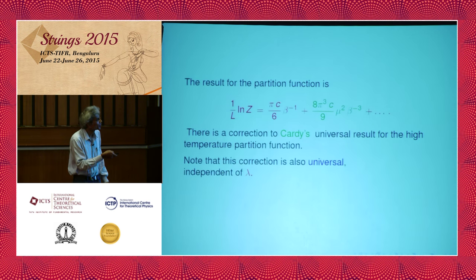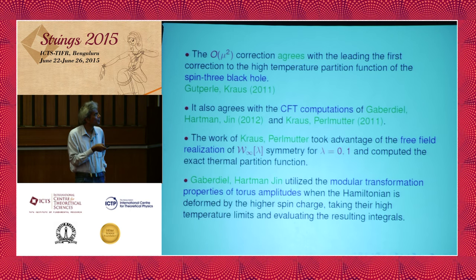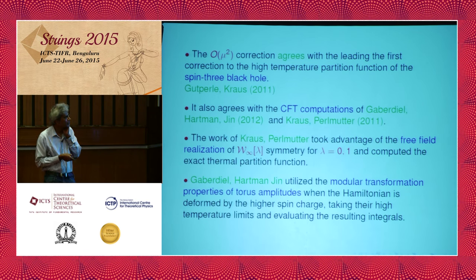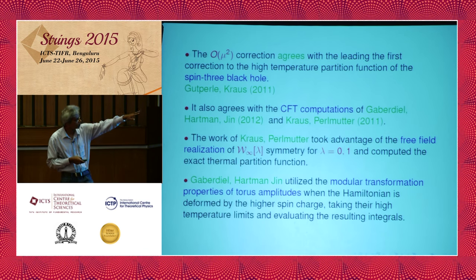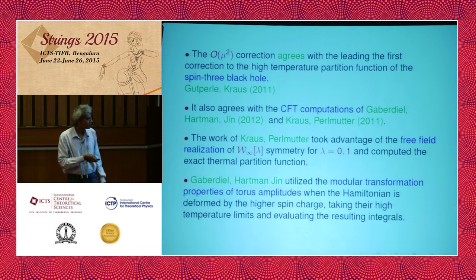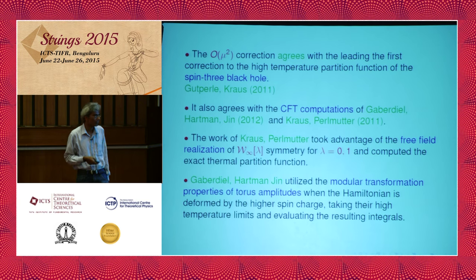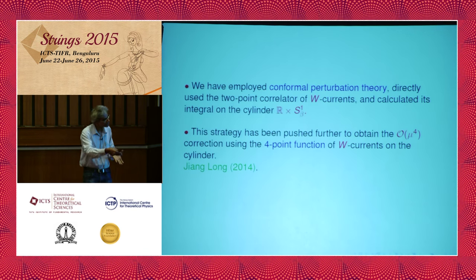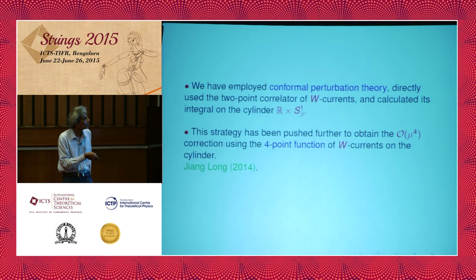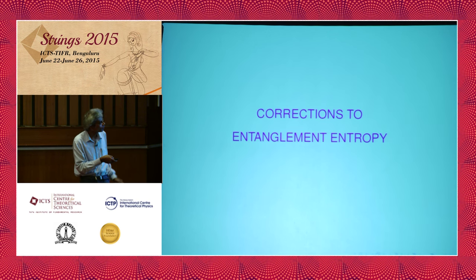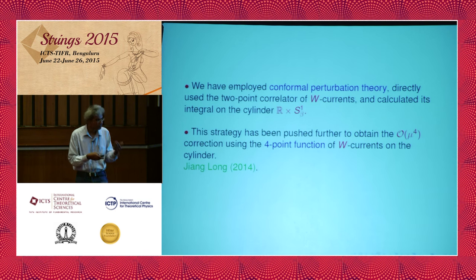This order mu squared result agrees with the correction to the high-temperature partition function of the spin-3 black hole constructed earlier, and also agrees with CFT computations of Gaberdiel, Hartman, and Jin, done in two different ways. Kraus and Perlmutter took advantage of the free-field realization, while Gaberdiel, Hartman, and Jin developed more sophisticated techniques using modular transformations of torus amplitudes. Our method, which simply develops conformal perturbation theory, is reasonably simple, and this strategy has been pushed to the next order recently. With this confidence, let's move on to the entanglement entropy.